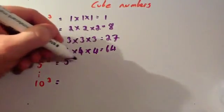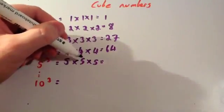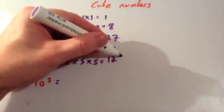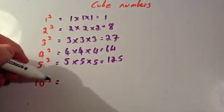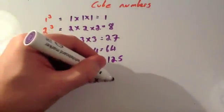5 cubed is 5 times 5 times 5. Well 5 times 5 is 25, times 5 is 125. Another useful one to know is 10 cubed. 10 times 10 times 10 is 1000.